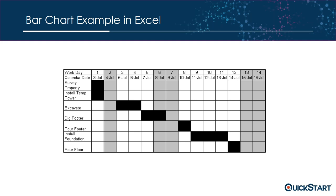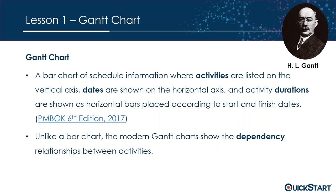I created a bar chart example in Excel. You can see your activities down the left-hand side, your dates across the top, and the duration for each task is depicted by the length of the bar. That was the definition — now you see an example. But remember, we are talking about Gantt charts, so unlike a bar chart, the modern Gantt chart shows the dependency relationship between activities.